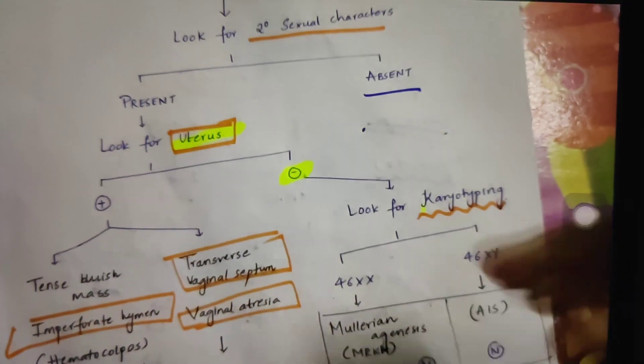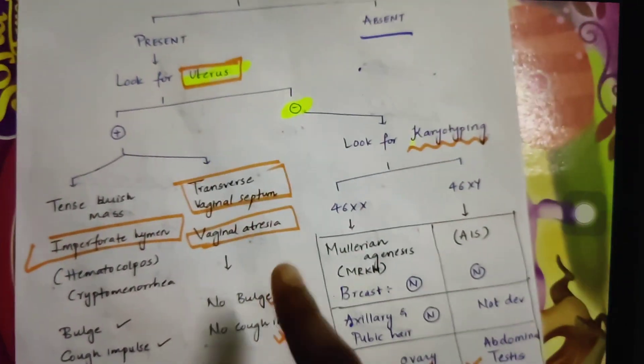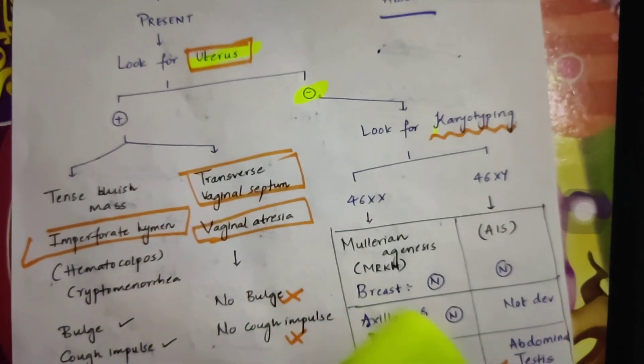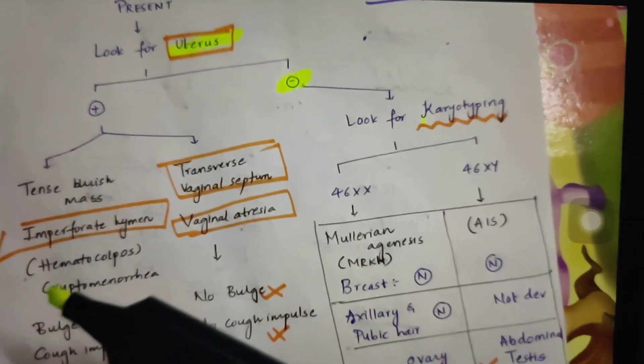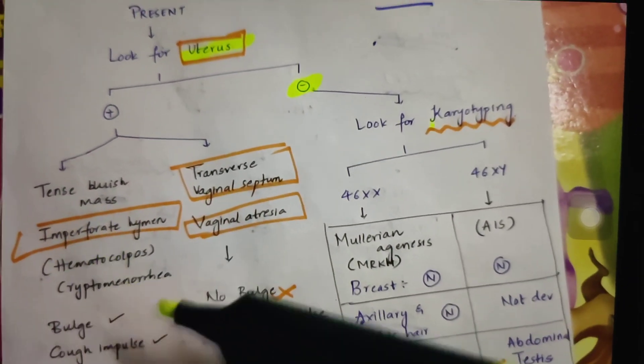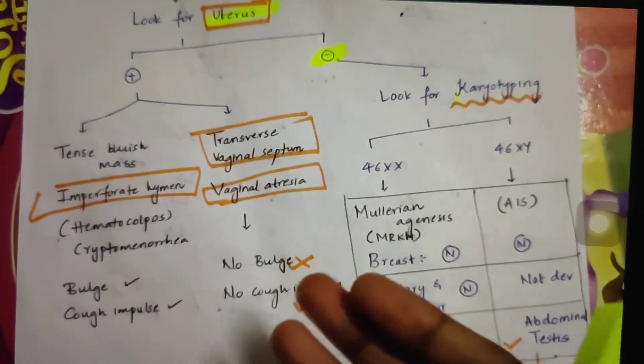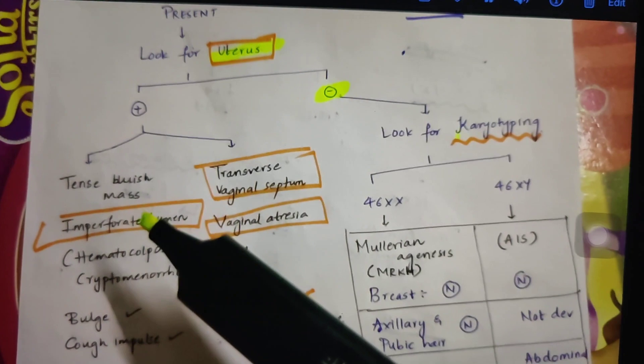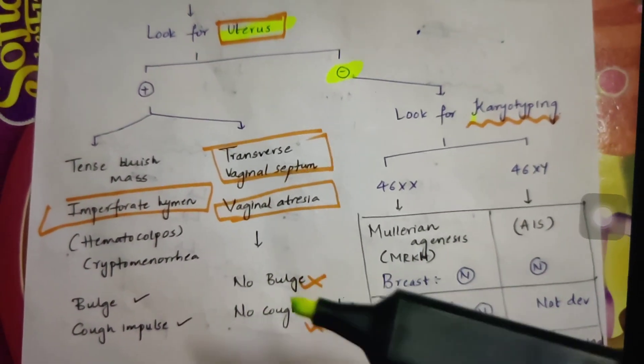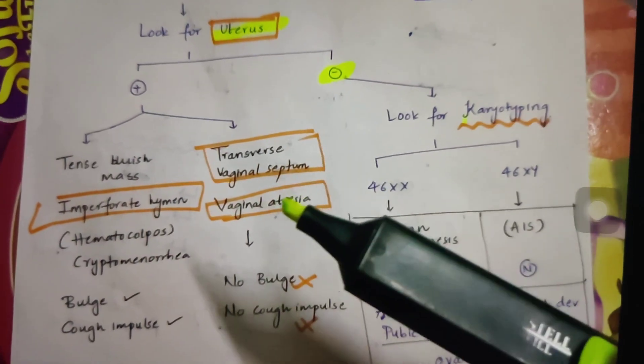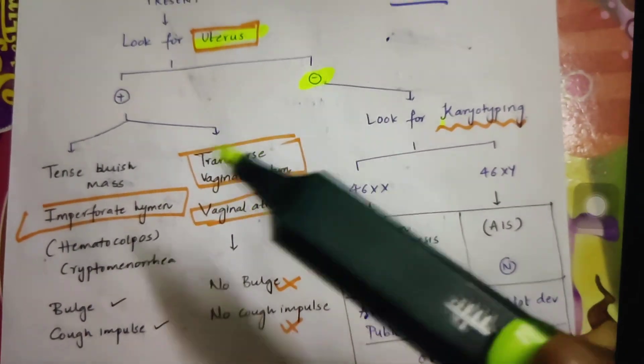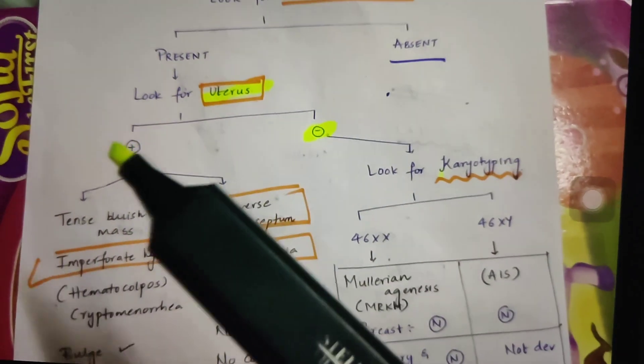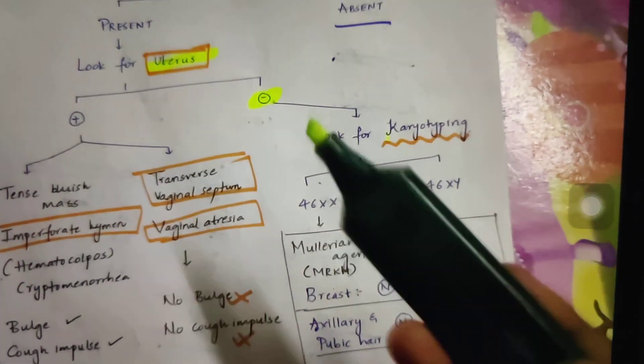If they are present, then look for uterus. If the uterus is also present, then you need to narrow it down to three differential diagnoses: imperforate hymen, transverse vaginal septum, and vaginal atresia. If the uterus is present and the patient is presenting with tense bluish mass and imperforate hymen with a bulge and cough impulse present, then it is imperforate hymen. If bulge is absent and cough impulse is also absent, then it is transverse vaginal septum or it might be vaginal atresia also. You can narrow it down to these three differential diagnoses once the uterus is present and secondary sexual characters are present.